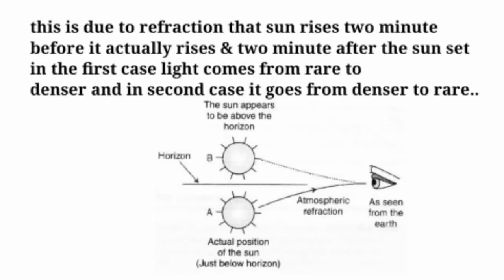And now here is a question: Why sun rises two minutes before and sets two minutes after? This may be described as due to refraction. The sun rises two minutes before it actually rises and two minutes after the sunset. In the first case, light comes from rare to denser, and in the second case, it goes from denser to rare.